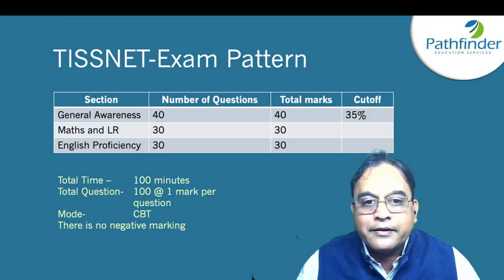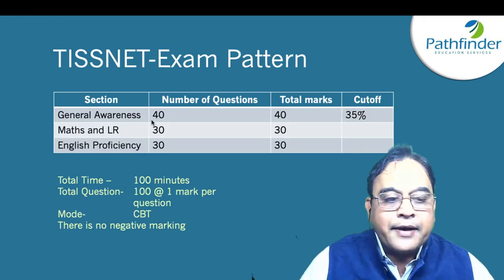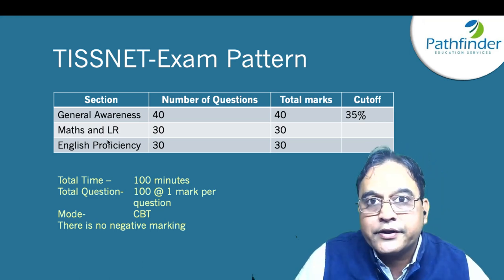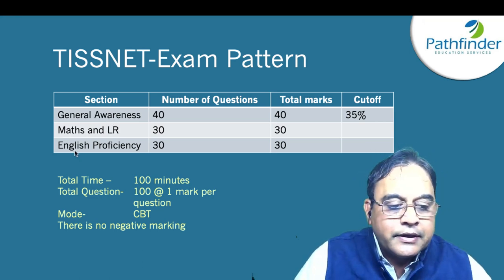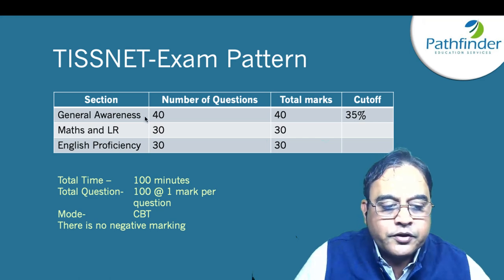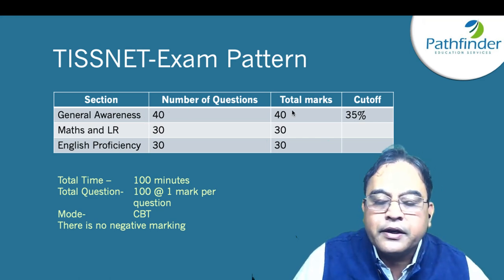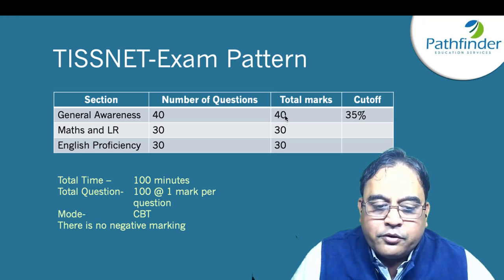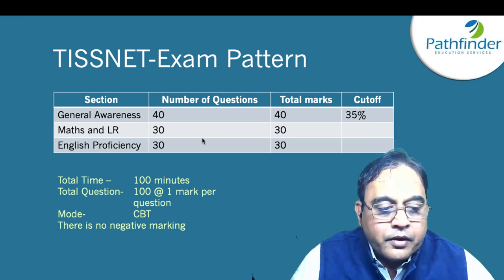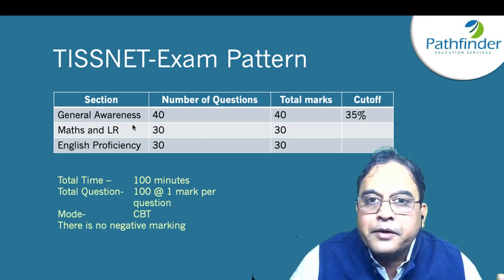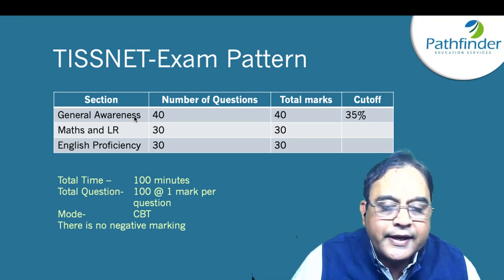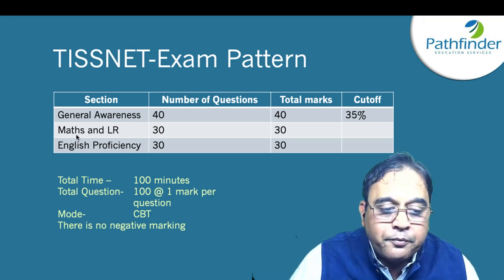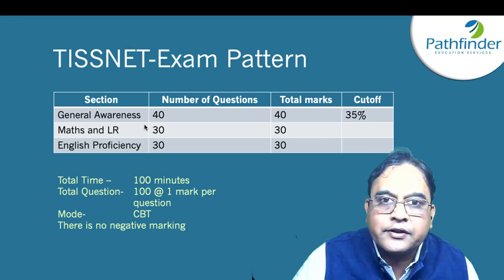Now the TISnet exam pattern. The TISnet exam has three sections: General Awareness, Mathematics and Logical Reasoning, and English Proficiency. General Awareness has 40 questions worth 40 marks. This is the make-or-break section for any TIS aspirant — if you want to qualify, you must pay special attention to General Awareness. It has one of the best GK sections I have seen across all MBA entrance exams.